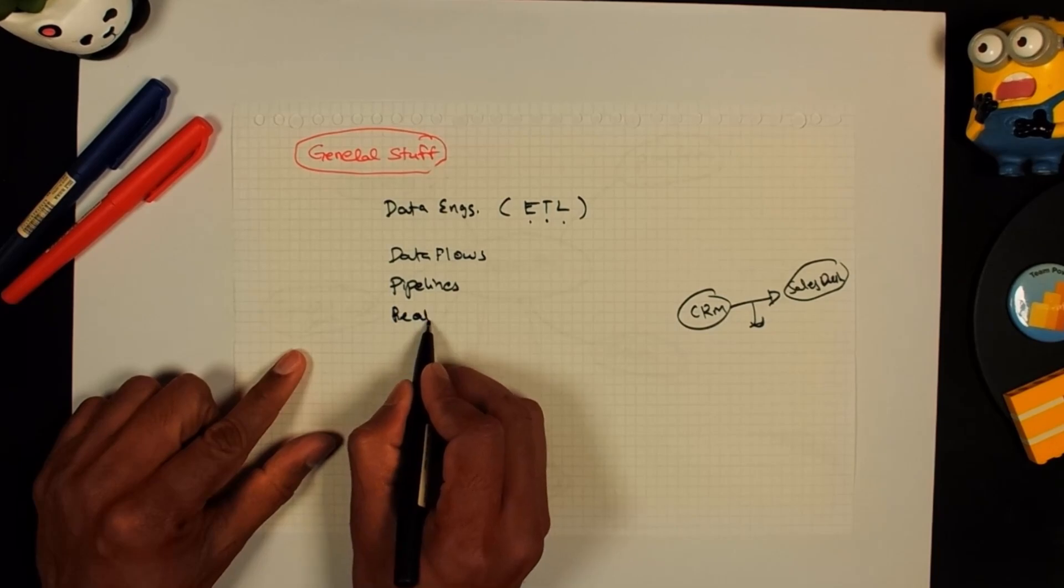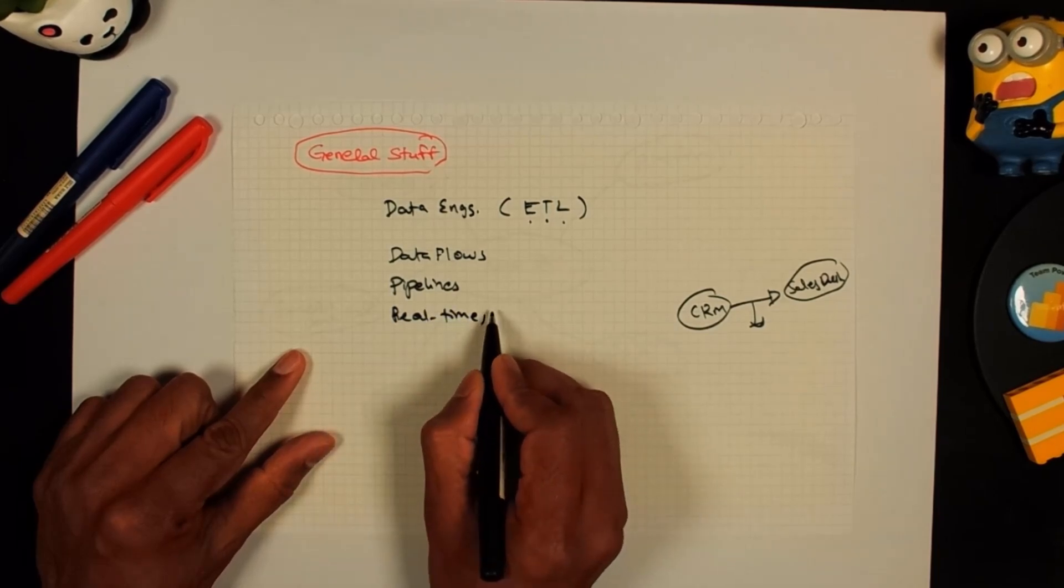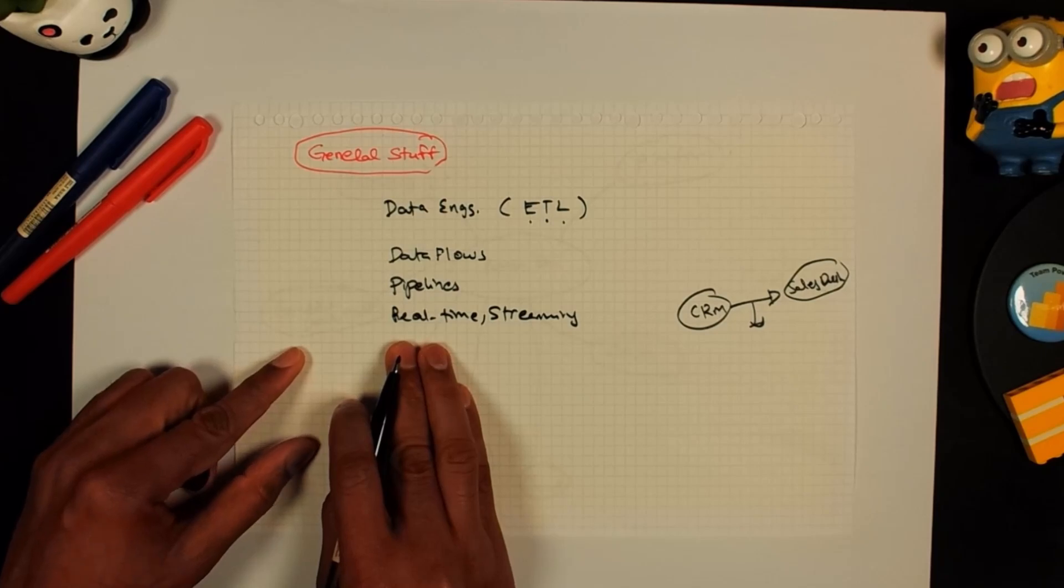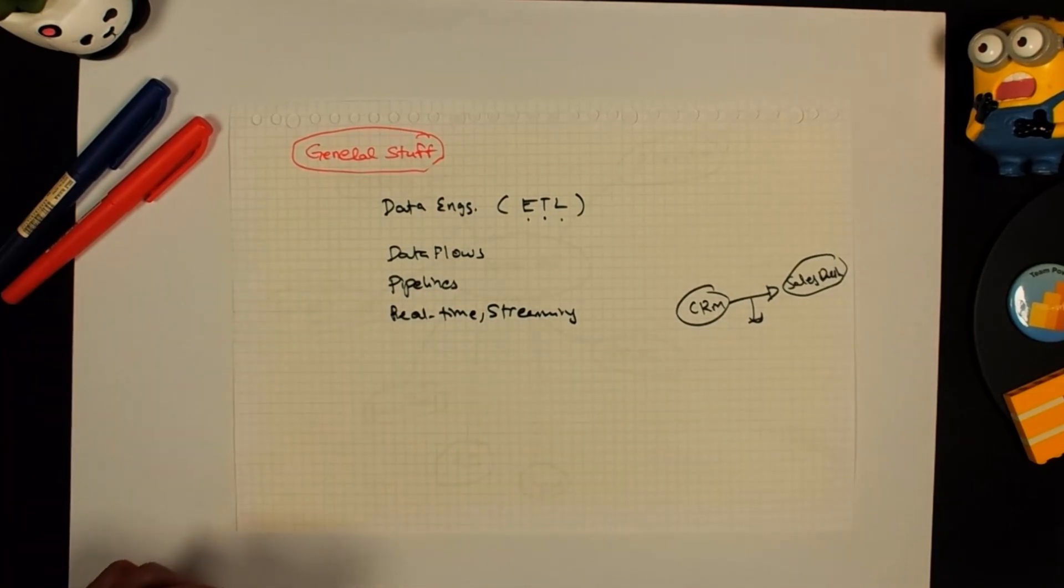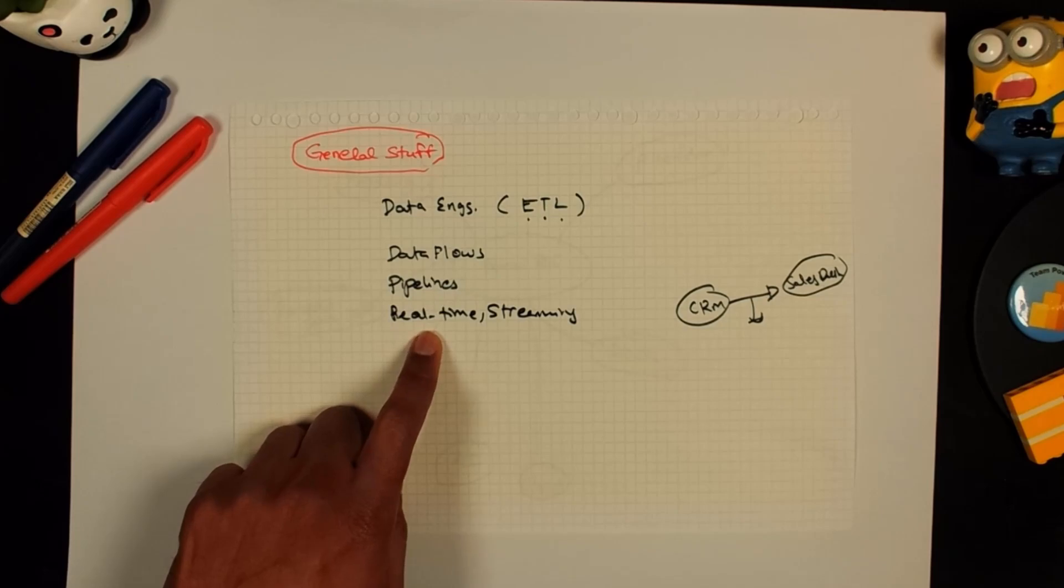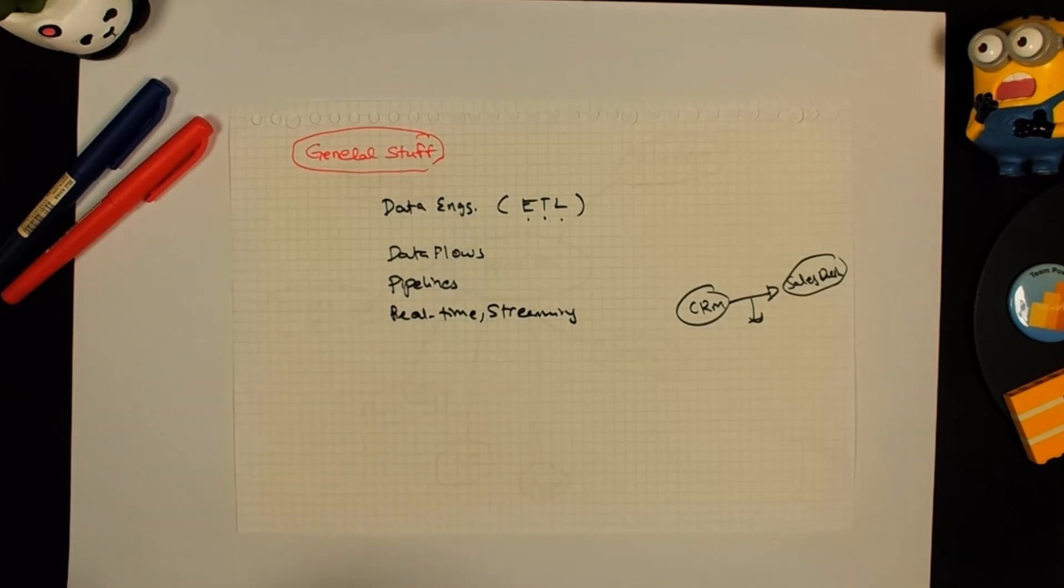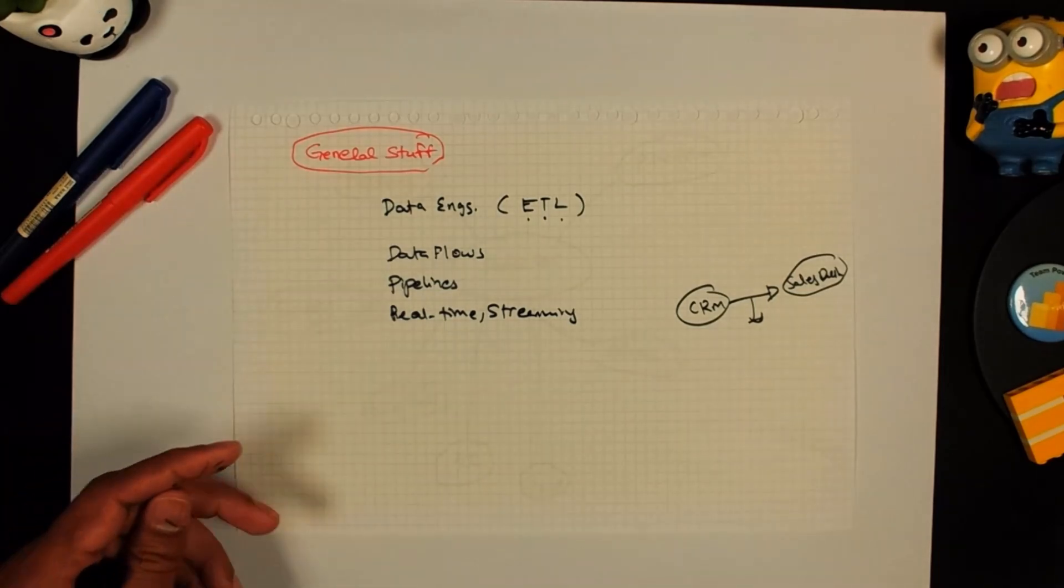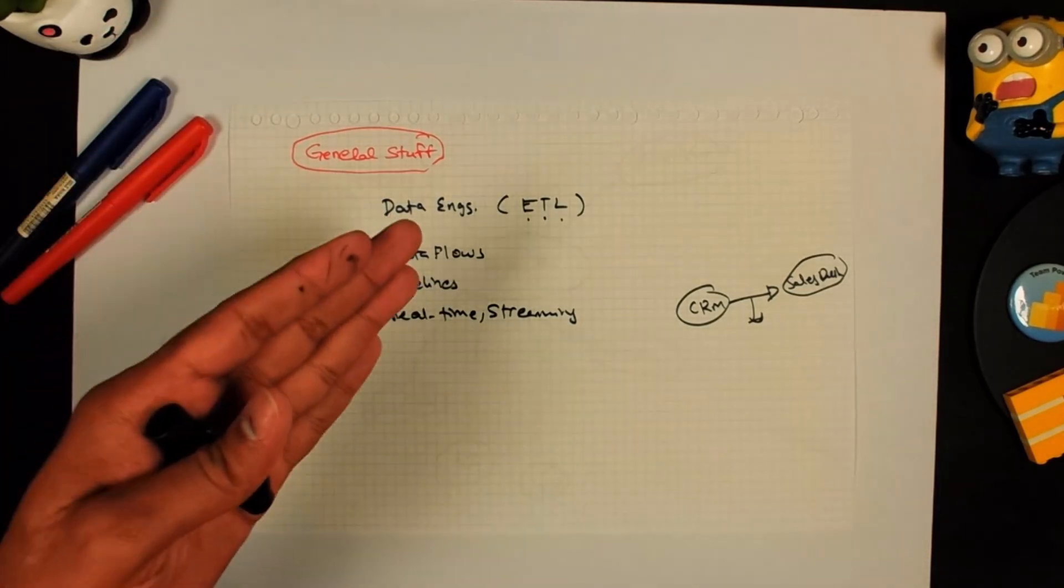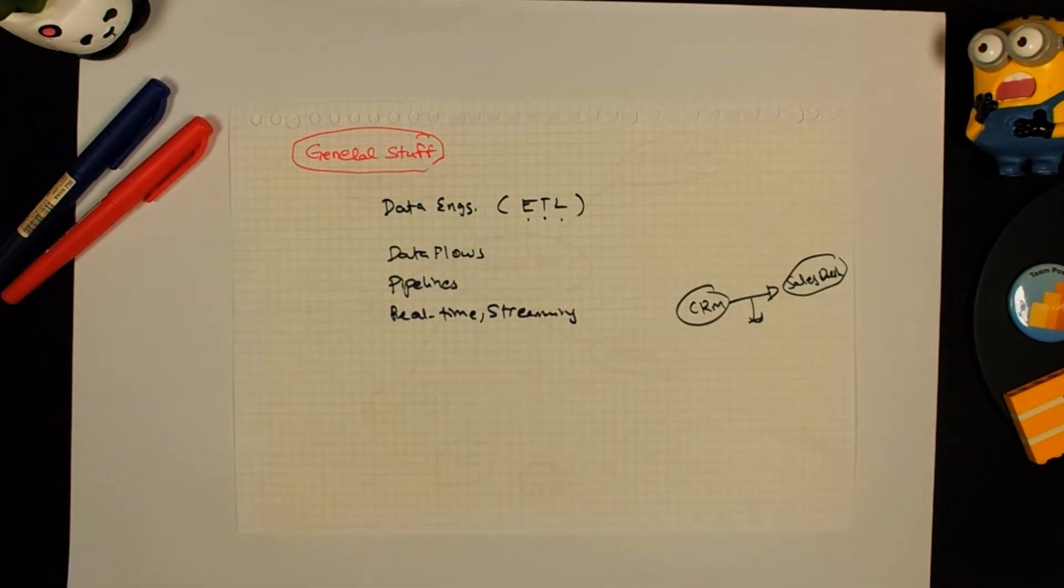You might also hear another word called real-time data or streaming data. What this means is you are connecting to data as it is happening. So for example, if you want to create a live chocolate shipment dashboard that just updates as and when we ship another box of chocolates, you might connect to a real-time data source. This data source is capable of streaming the data. That means as it happens, it will push new data out into the either data flow or pipeline and then that pipeline will update and then finally you will have output here.